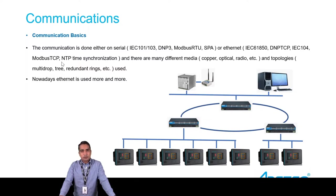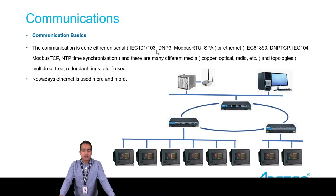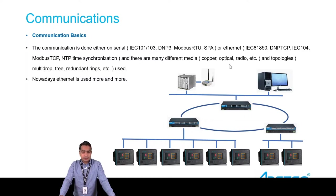There are different types of protocols used in communication, and some of these are available on the ArcTech relays. I have divided them into two categories: serial communication and Ethernet communication. Serial communications are IEC 101, IEC 103, DNP3, Modbus RTU, and SPA. Ethernet communications include IEC 61850, DNP3 TCP, IEC 104, and Modbus TCP. There are different media for communication such as copper, optical, radio, and different topologies such as multi-drop and pre-redundant ring. Nowadays Ethernet is more commonly used.